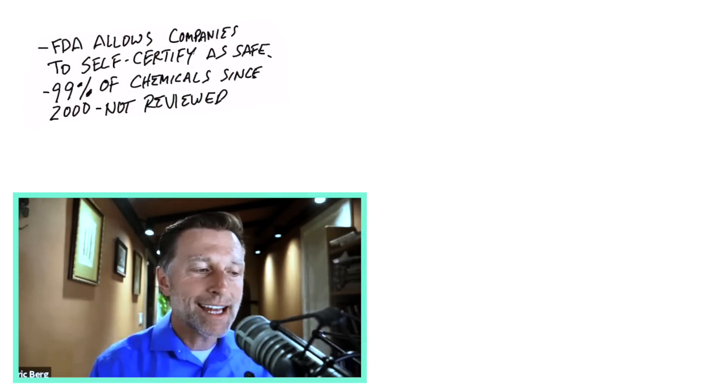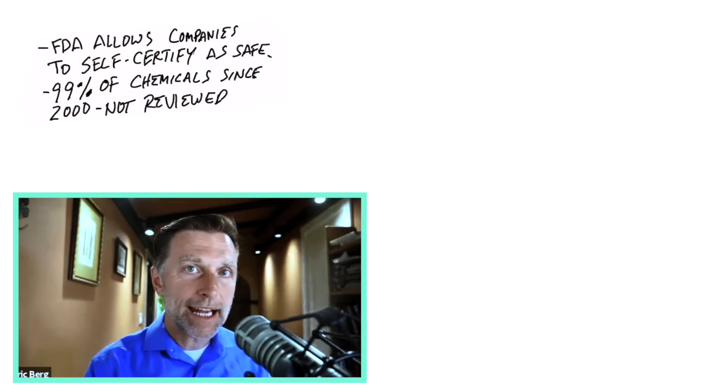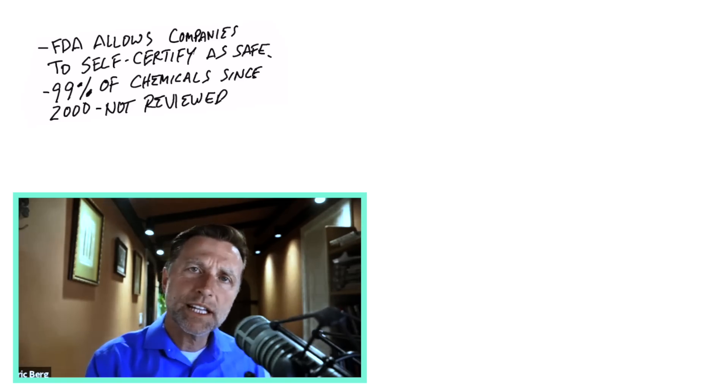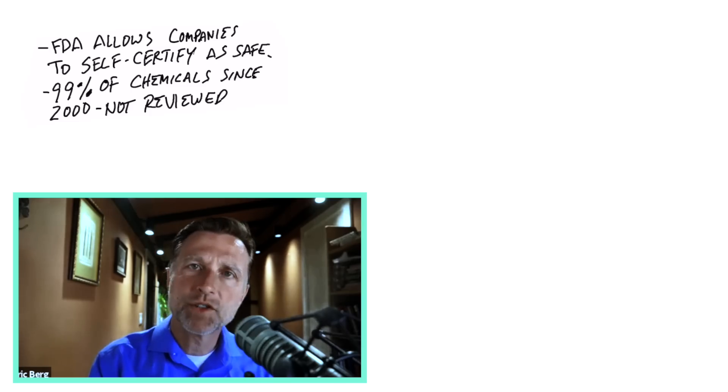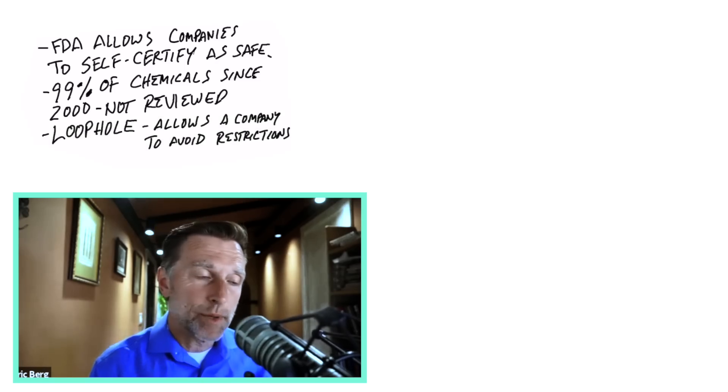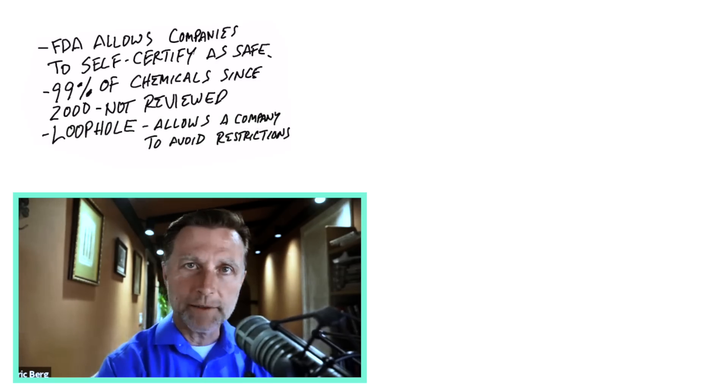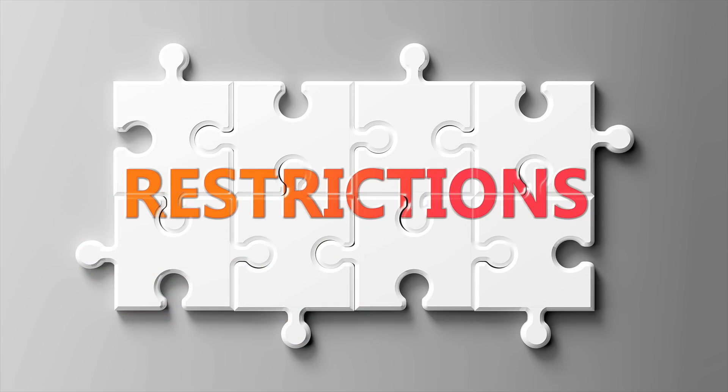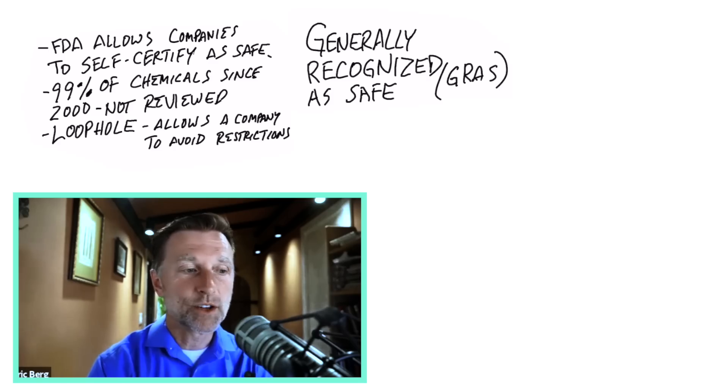Think about this: we have like 10,000 chemicals in our food supply, and 99% of them have not really been reviewed for safety. This leads me to a new definition I want to share with you. It's called a loophole. A loophole is something that a company can use to avoid certain restrictions, and that's exactly what this GRAS is.